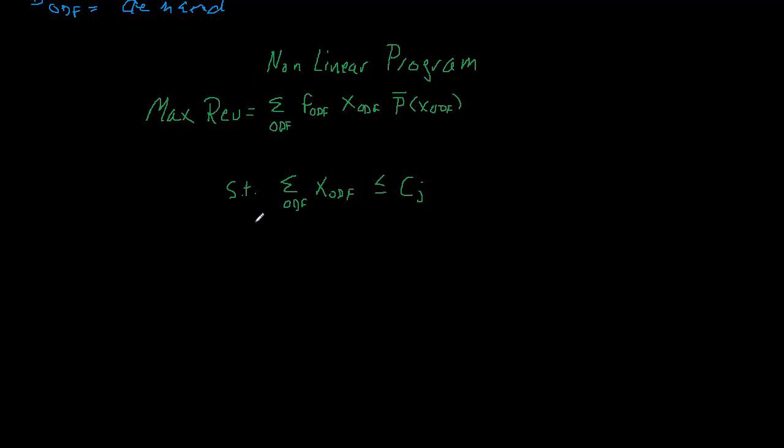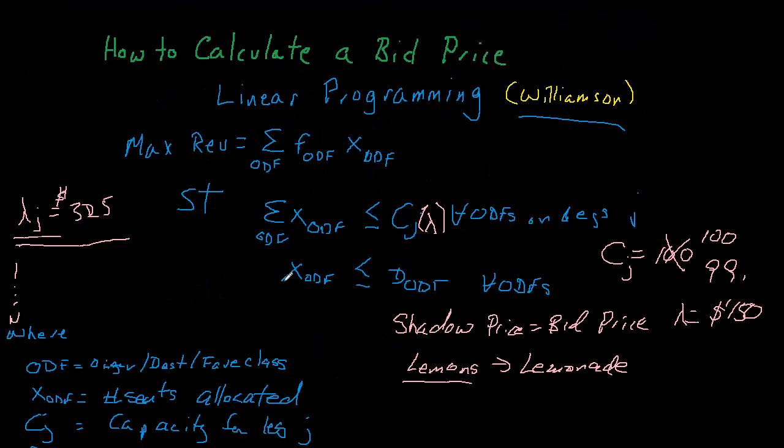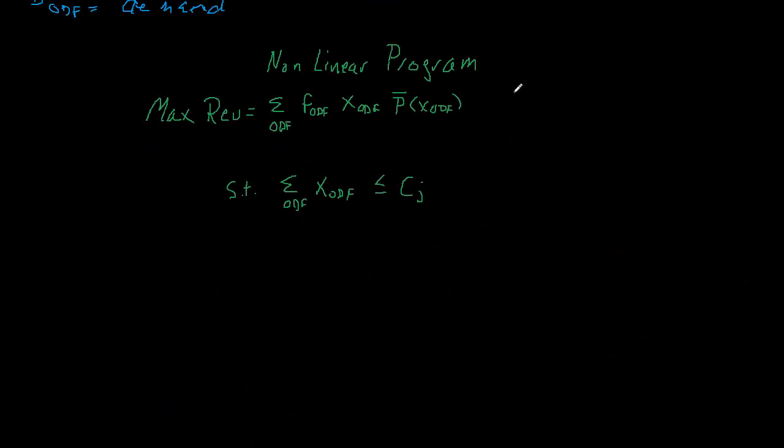Now let's take a look at the constraints. Well, the capacity constraint does not change at all. We're still going to make sure that we don't allocate more seats on any itinerary that would exceed the capacity of a flight leg that is part of that itinerary. Then we're going to eliminate the demand constraint that we had up here because we no longer have to be concerned that we are allocating fewer seats than we have demand because we've sort of incorporated that in the objective function. The only other thing we're going to do here is put a non-zero constraint in here so that we're not allocating less than zero seats.